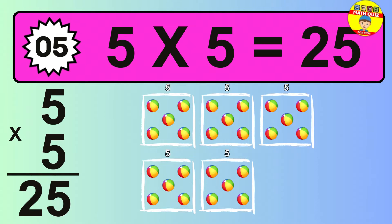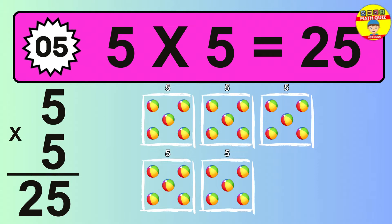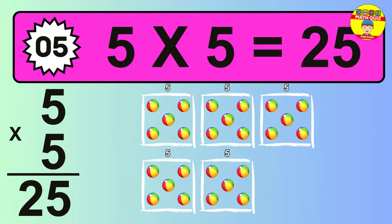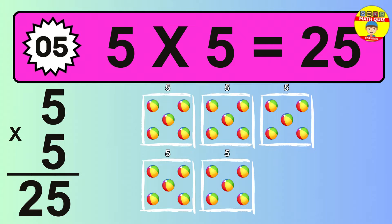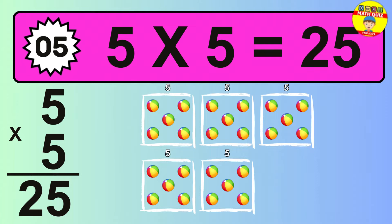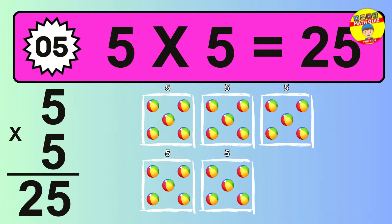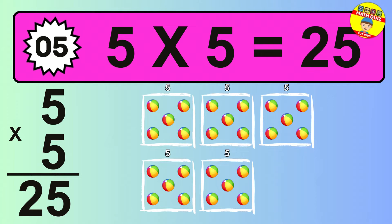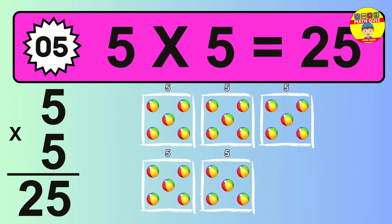The answer is 5 times 5 is 25. To calculate, we have 5 groups with 5 balls each one. So, how many balls do we have? 25 balls.